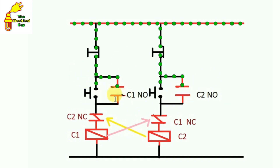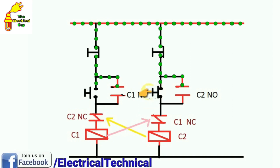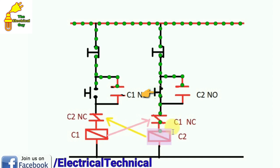But when this contactor is turned off, this becomes NC again. Now both auxiliary contacts are NC, and here is NO because this contactor is now turned off — when it is off it goes back to normal condition. In normal condition this will be NO — we name this C1 NO and similarly the other is C2 NO. In normal condition it is open here, here, here, and here. These won't let current flow further.